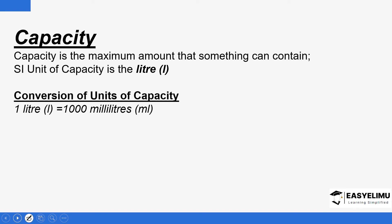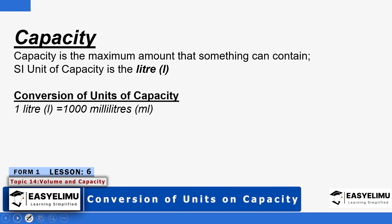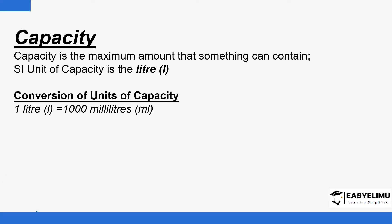Capacity is defined as the maximum amount that a given container can contain — how much, or what is the maximum that a particular container can carry. For example, if you have a container like a measuring cylinder, what is the maximum that it can carry? You could be talking of the volume in it, but what is its maximum? That is what we call capacity — the maximum amount that something can contain.